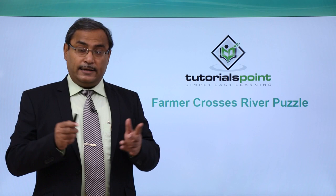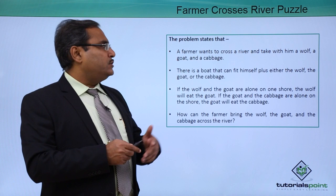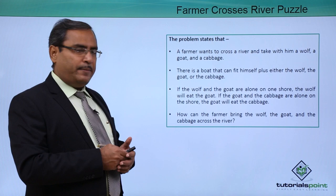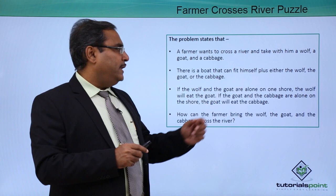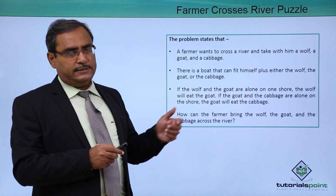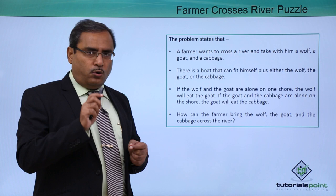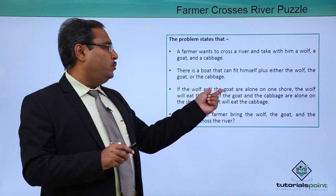Farmer crosses river puzzle. It is a very interesting problem, so let us discuss it. The problem states that a farmer wants to cross a river and take with him a wolf, a goat, and a cabbage. There is a boat that can carry the farmer plus either the wolf, the goat, or the cabbage — so only one additional item at a time.